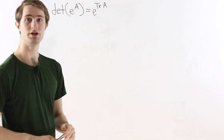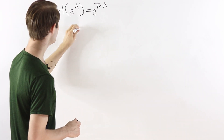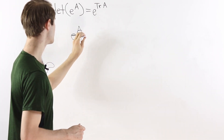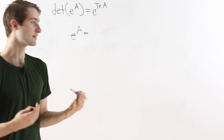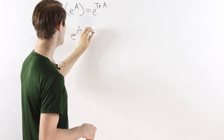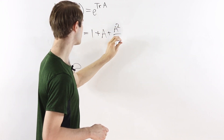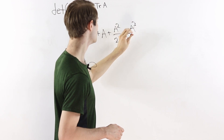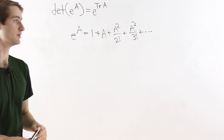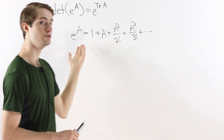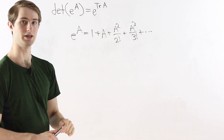To start, let's talk about what e to the A means when A is a matrix. We define this exponential function e to the A using the infinite sum formula for the exponential. So e to the A equals 1 plus A plus A squared over 2 factorial plus A cubed over 3 factorial plus A to the fourth over 4 factorial, and so on to infinity. Using this formula we can derive the results we need regarding the determinant and the trace.